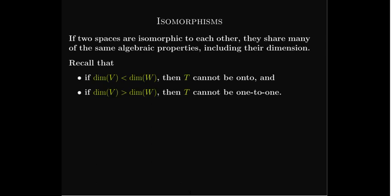That should make sense because if the dimension of the domain is smaller than the dimension of the codomain, there's no way we have enough input to cover all of the output space, so it cannot be onto. On the other hand, if the dimension of the domain is larger than the dimension of the codomain, we have too much input, and the only way to find a target for all inputs is to reuse some output vectors — so at least two input vectors get mapped to the same output vector, and T is not one-to-one.